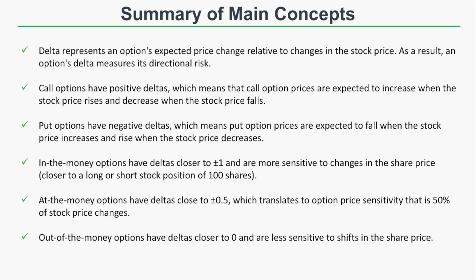In-the-money options have deltas closer to plus or minus 1, are more sensitive to share price changes, and are more equivalent to long or short stock positions of 100 shares. At-the-money options have deltas near plus or minus 0.5, translating to about 50% sensitivity to stock price changes. Out-of-the-money options have deltas closer to 0 and are less sensitive. For a lot of directional exposure, trade in-the-money options; for medium exposure, at-the-money; for less exposure, out-of-the-money.